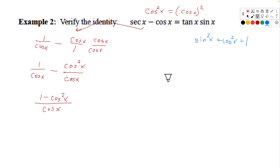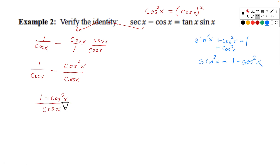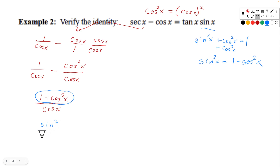We were given sine squared x plus cosine squared x equals 1. Subtracting cosine squared from both sides gives 1 minus cosine squared equals sine squared x — another version of the Pythagorean identity. So we replace 1 minus cosine squared with sine squared x. We're getting closer to what we want because we see a sine on the right side. We've got sine squared over cosine, but the right side has just sine, not sine squared.